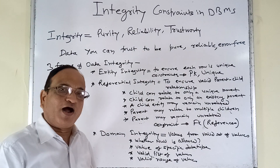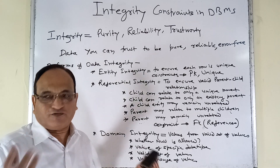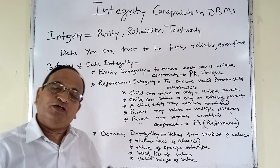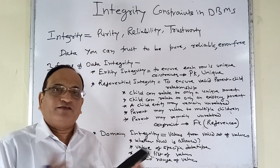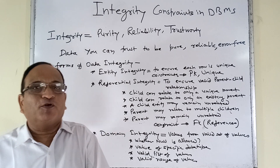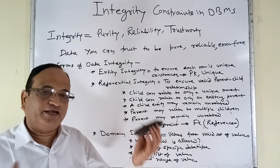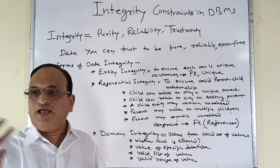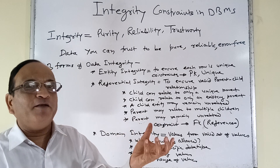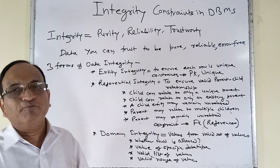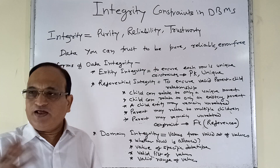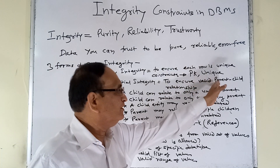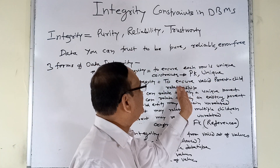Referential integrity is required because no entities in the real world are actually isolated. All entities in the real world are related to each other, and if you look closely at those relationships, you will see they are in a parent-child form. For example, if there is an entity department and an entity employee, there is a relationship between them. The department must first exist before an employee can be recruited and placed in that department. So the department becomes the parent entity, and the employee becomes the child entity. There are certain rules required to be followed for this parent-child relationship.